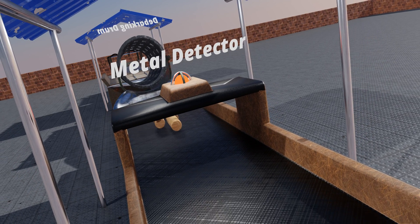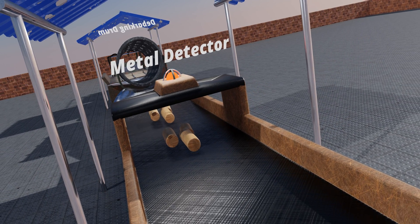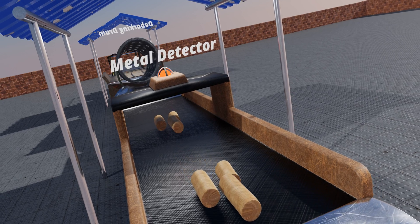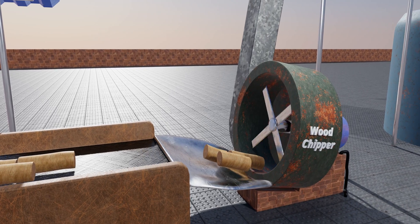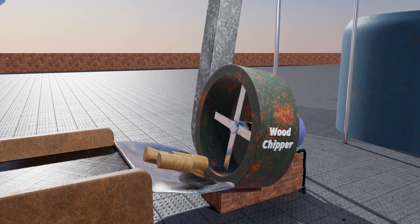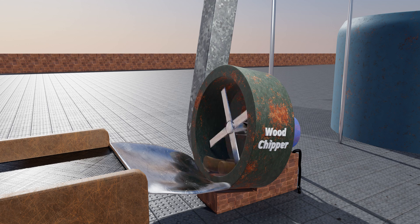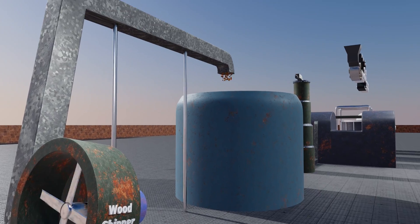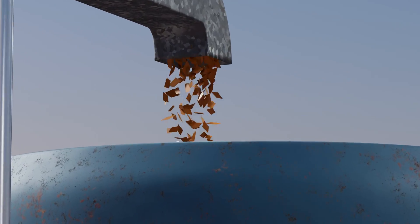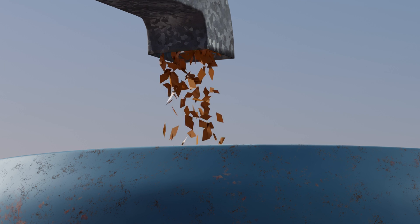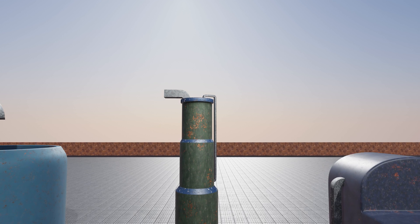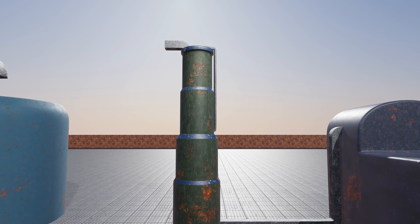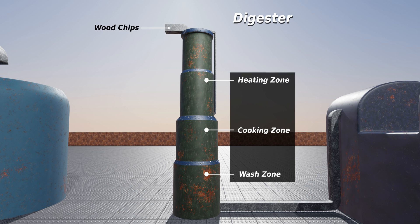Then there is a metal detector that can detect very small pieces of metal, which must be removed. The logs are then fed into a chipper, where they fall into a rotating disc with sharp cutting blades, which converts the wood into small pieces called wood chips. These wood chips are fed into a digester, where they are boiled in an acid solution to dissolve lignin and separate the fibers. The pulp obtained from this process is wood-free, because the lignin has been dissolved.